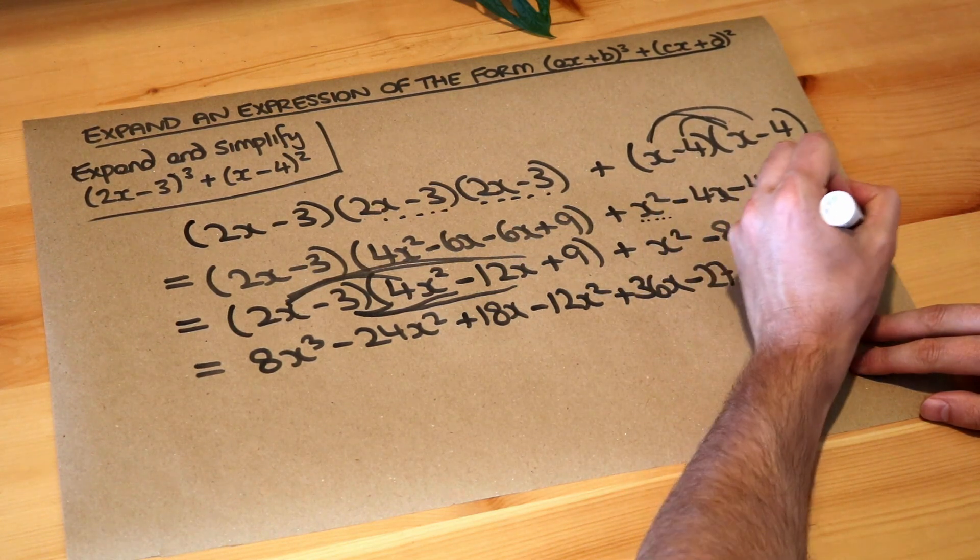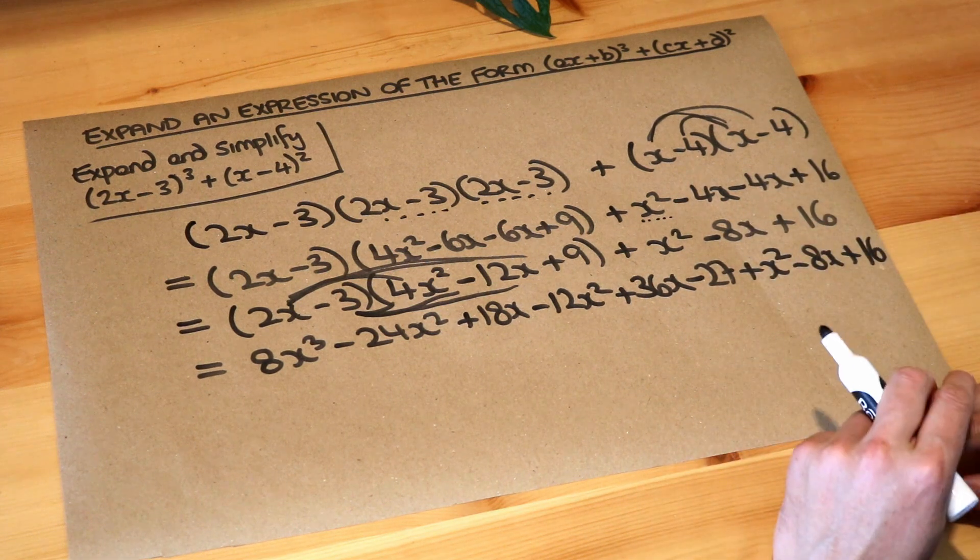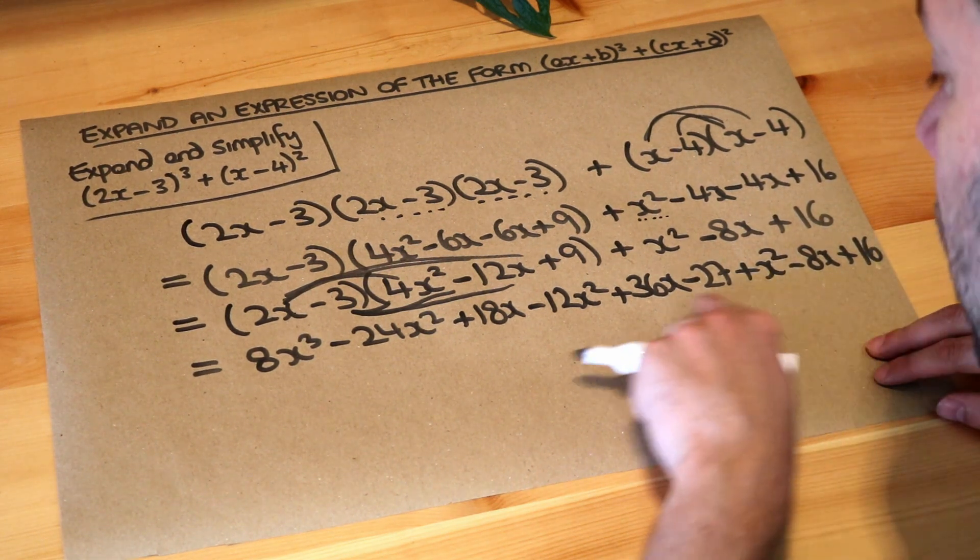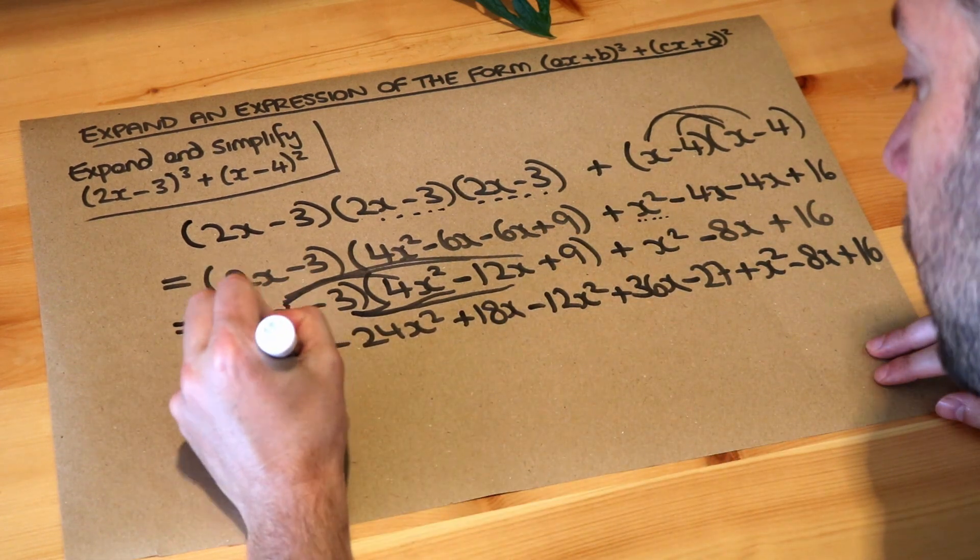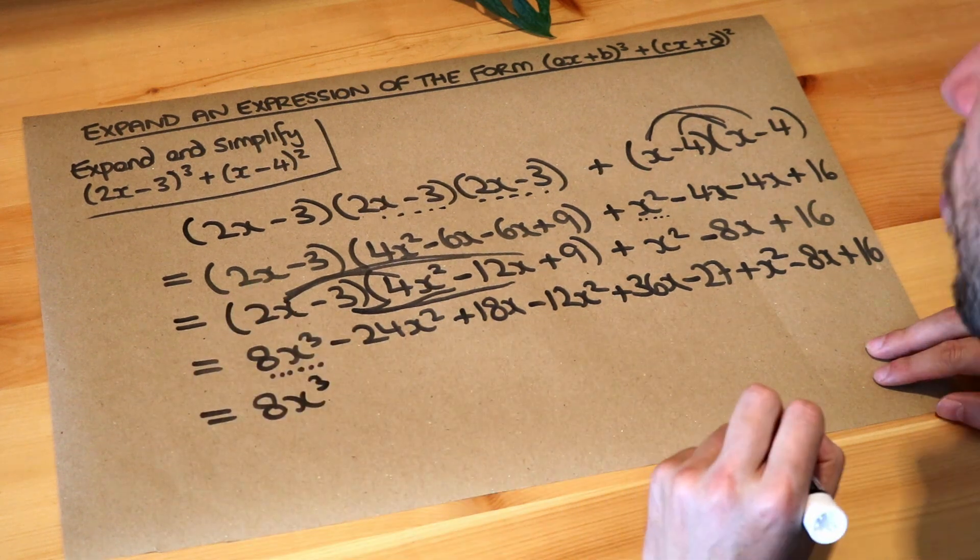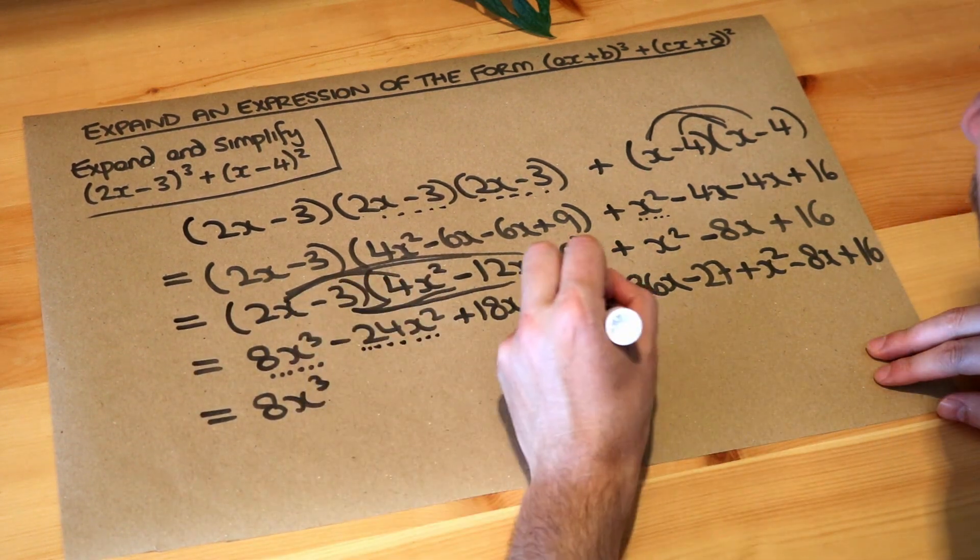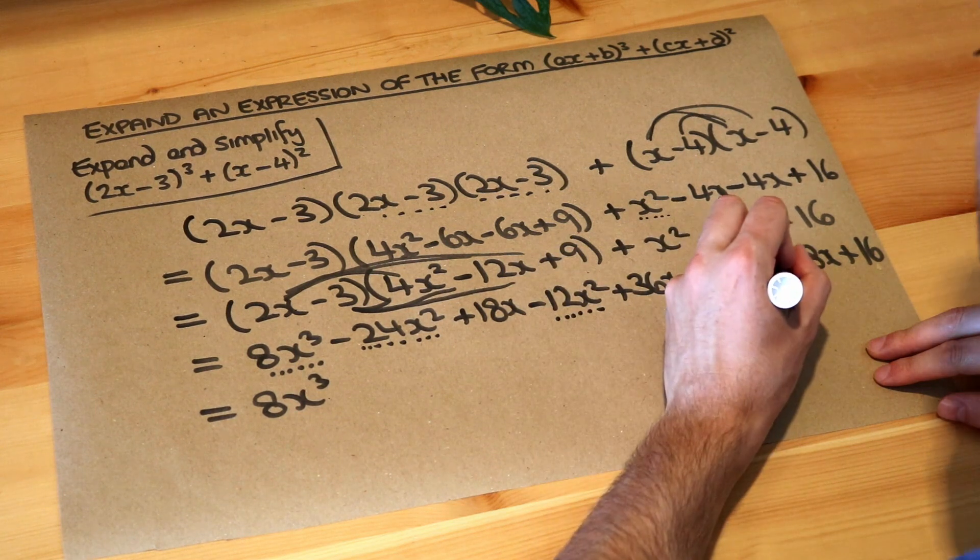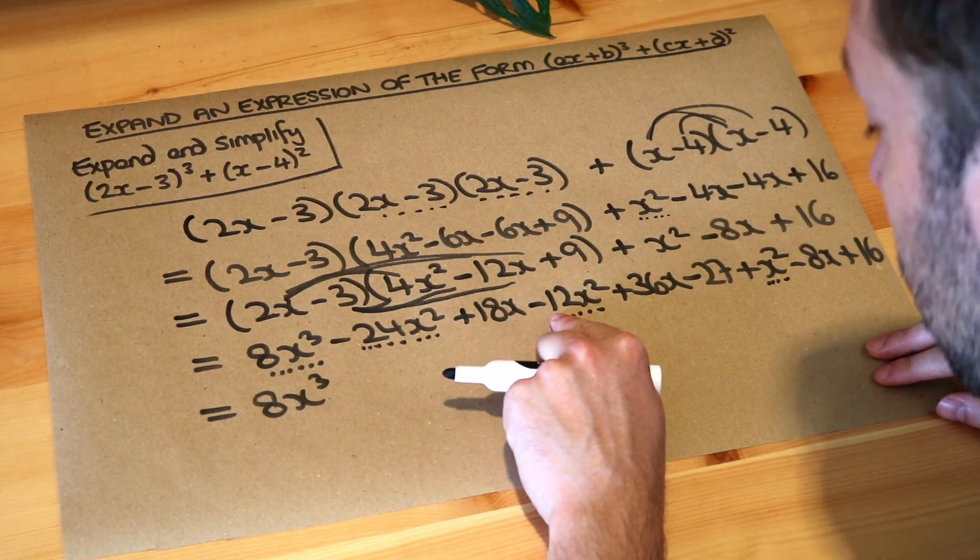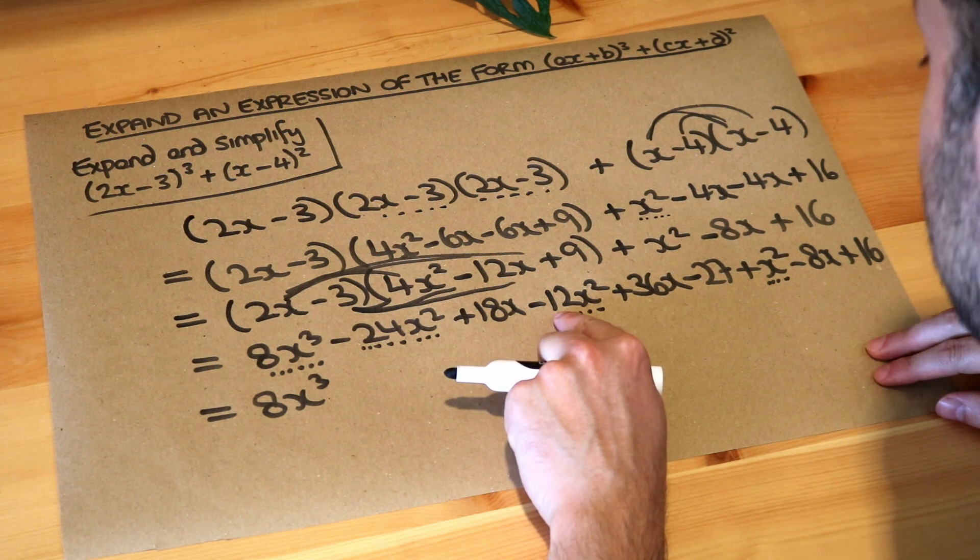And now we're on the home straight, we just need to collect like terms. Let's see what we've got. What x³ terms do we have? Well that's the only one there, so we've got 8x³. What x² terms do we have? We've got this x² term, this one, and we've got this one. So we've got -24x² minus another 12 lots of x², that's -36x², but we're adding one lot of x², that's -35x².